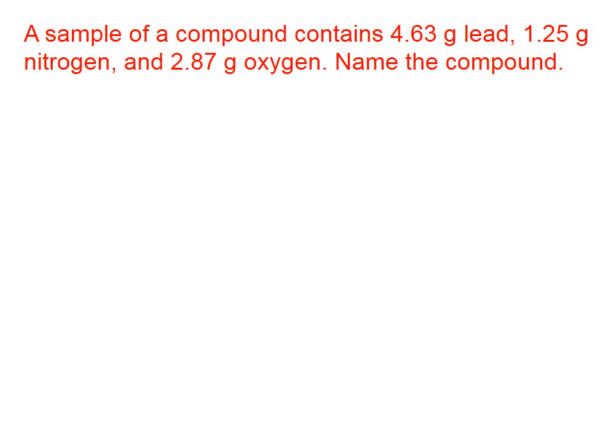Let's try one more. A sample of a compound contains 4.63 grams of lead, 1.25 grams of nitrogen, and 2.87 grams of oxygen. Name the compound. Well, in order to name the compound, we need to know its formula. So, let's start by trying to find its empirical formula.